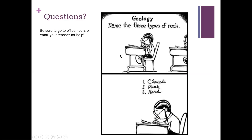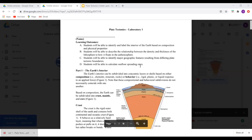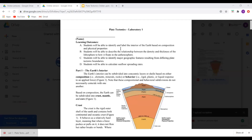Now I'm going to flip through the lab quickly. The learning outcomes for Lab 1 are: you will be able to identify and label the interior of the Earth based on composition and physical properties; describe the relationship between density and thickness of the lithosphere and how it floats on the asthenosphere; identify major geographic features; and calculate seafloor spreading rates.